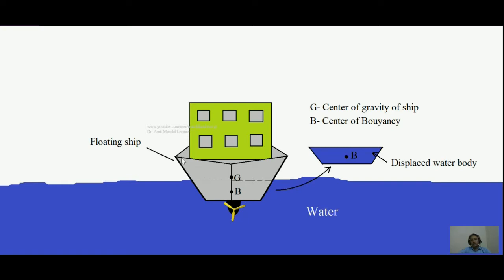So let's start. You can see that this is a floating body — a ship is floating on water. This is the propeller of the ship. The ship is deep inside the water and this much volume of water it is displacing, as I am showing with the cursor. The amount of water body displaced is what I have shown here.